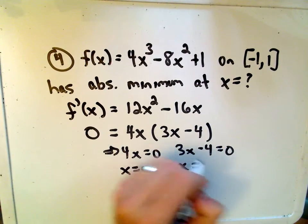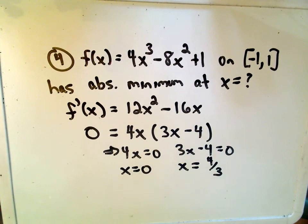Solve each piece, we'll get x equals 0, add 4, and divide by 3. So we get our solutions to be x equals 0 and x equals 4 thirds.